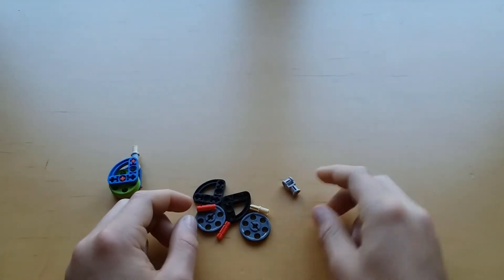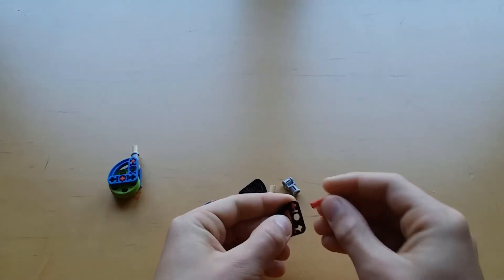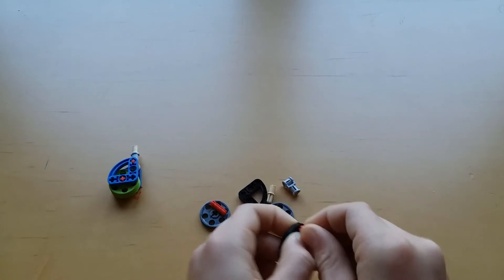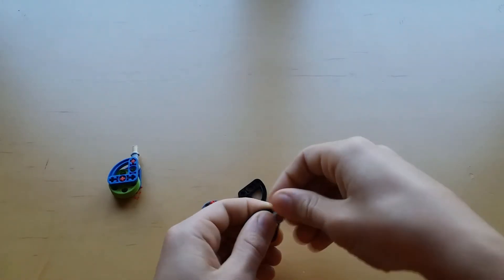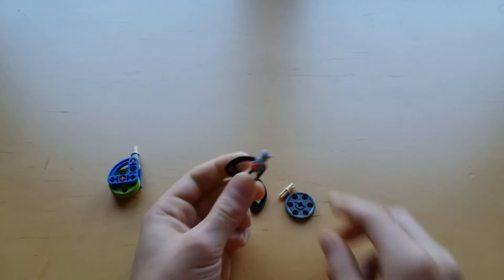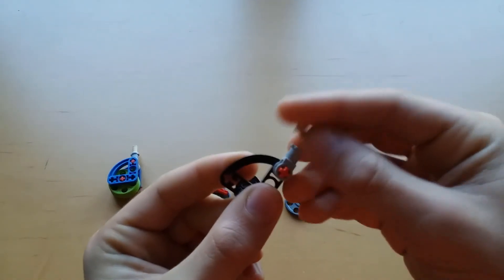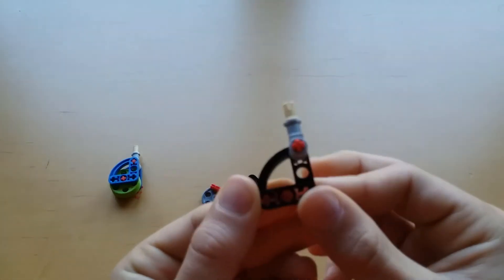To get started, we're going to put the two long axle through this piece and this piece on top of the axle. Now thread the frictionless peg into the top, and we're done with this part.